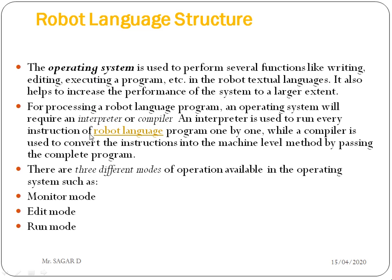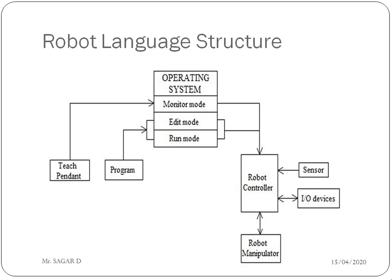The operating system in the robo language structure has three different modes of operation: monitor mode, edit mode, and run mode. Looking at the diagram of the robo language structure, the OS has these three modes. Monitor mode is also called supervisory mode. In edit mode, we can edit the program. In run mode, we can run the program. If errors occur, the program goes back from run mode to edit mode. Monitor mode is related to the teach pendant, which is a controller we will discuss next.